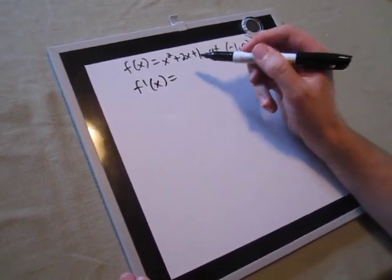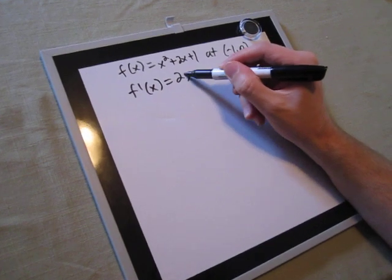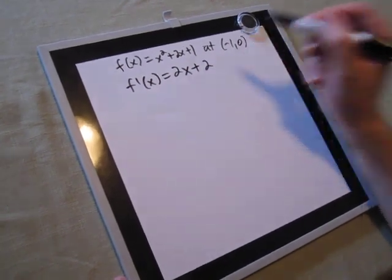The derivative of x² + 2x + 1 is going to be f'(x) = 2x + 2.